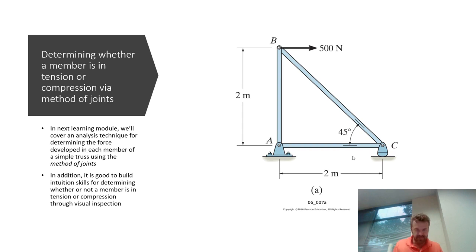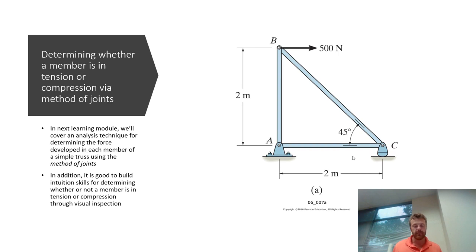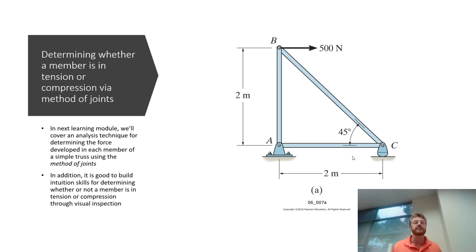I'm going to contradict myself a bit here, not because I want to but because the book does. We want to take on analysis techniques that work the same way every time and let the math do the work for us, so we don't have to have a lot of physical intuition when we build our basic models — which initially will be free body diagrams of the individual joints. However, it is good to build some physical intuition as mechanical engineers in order to determine whether individual members are in tension or compression.